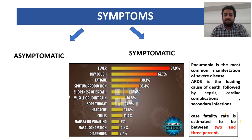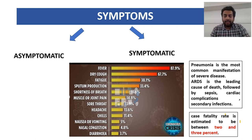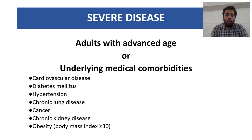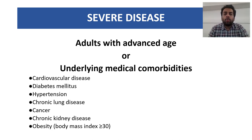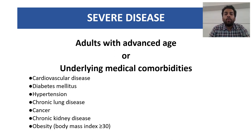COVID-19 can present across a wide spectrum — from asymptomatic on one end to acute respiratory distress syndrome, which is the most common cause of death. The good news is that the case fatality rate is only 2–3%, meaning only 2–3 patients out of every 100 will succumb to the disease. Those more likely to have severe disease are adults of advanced age, particularly above 60 years, or those with underlying comorbidities such as cardiovascular disease, diabetes mellitus, hypertension, chronic lung disease, cancer, chronic kidney disease, and obesity with a BMI of 30 or greater.